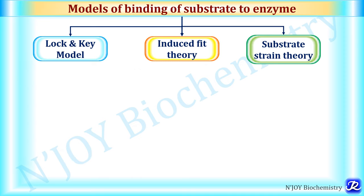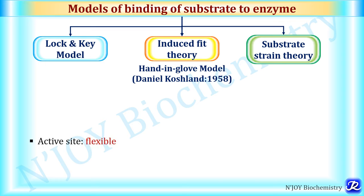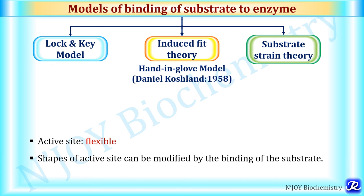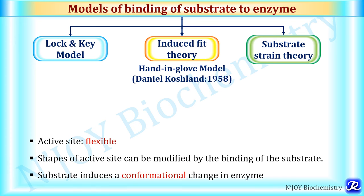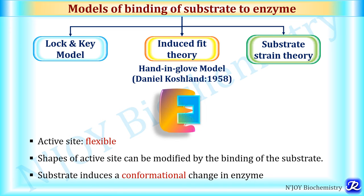The second model, the induced fit theory — also called the hand-in-glove model, proposed by Daniel Koshland in 1958 — states that the active site of the enzyme is flexible and its shape can be modified by binding of the substrate. The substrate induces a conformational change in the enzyme, and then enzyme catalysis occurs. It is called the hand-in-glove model because when a glove is put on a hand, the glove initially is in a partially folded position, but as the hand enters, the glove opens further. Similarly, conformational changes occur in the enzyme when the substrate binds. This theory can explain the effects of allosteric modulators.